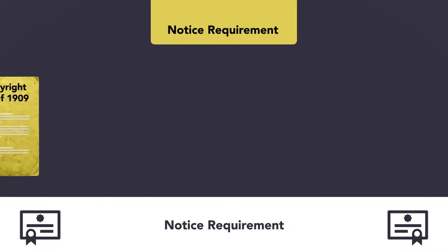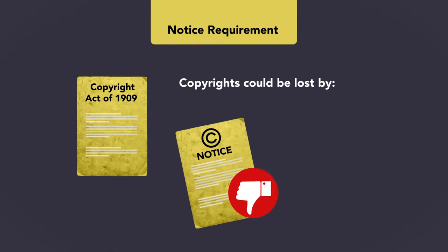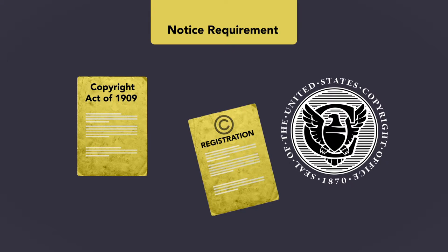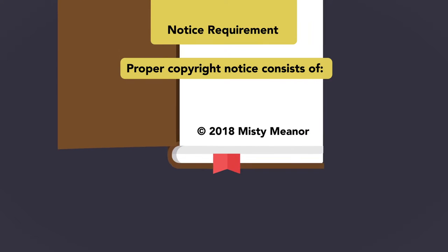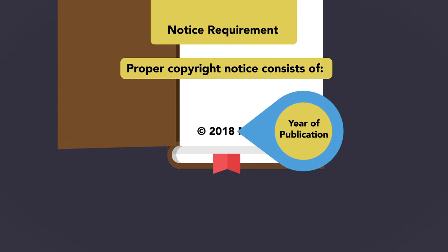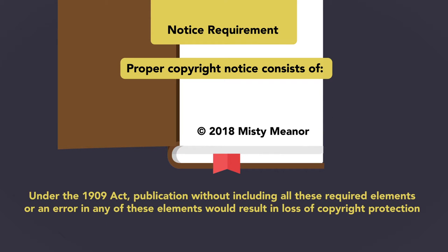Under the terms of the 1909 Act, copyrights could be lost by failure to include a copyright notice with the work when it was published. The 1909 Act required either publication or registration with the Copyright Office to establish copyrights. Proper copyright notice consists of several elements: first, the holder must affix a symbol or word indicating the work is copyrighted, such as a C with a circle around it, the word copyright, or COPR. The copyright notice must also state the year of publication and the name of the party claiming the copyright. Publication without including all of these required elements, or an error in any of them, could result in the loss of copyright protection.